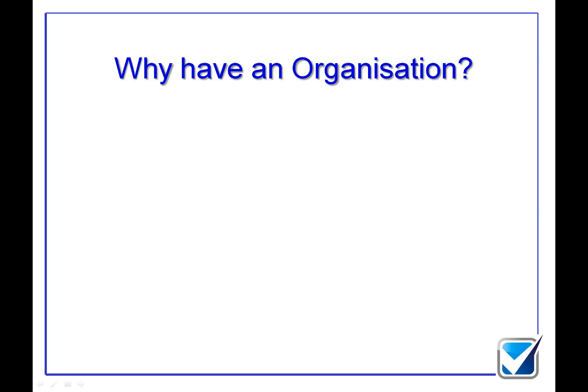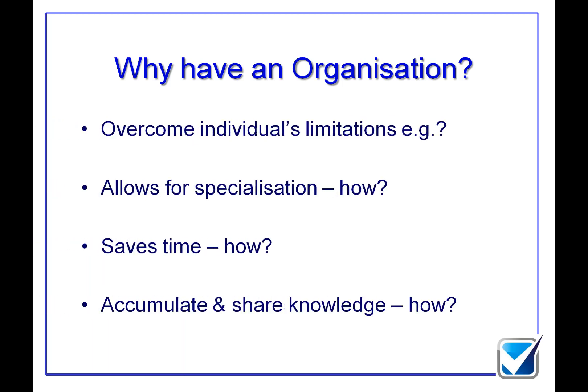So why would we bother having an organisation? The reasons include: you can overcome individuals' limitations - for instance, if you have a tax specialist and an auditing specialist, the audit specialist can now have additional input to make sure the tax stuff is correct. It allows for specialisation because the level of work can increase, and individuals can become very specialist in specific areas. It saves time because specialists can do things more quickly. It also means you can accumulate knowledge - the specialist will know how to deal with something, get lots of experience, and that knowledge can be shared between other members of the organisation.